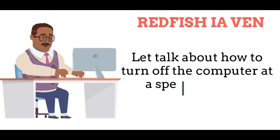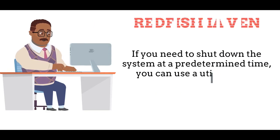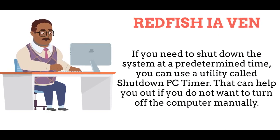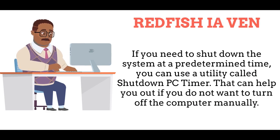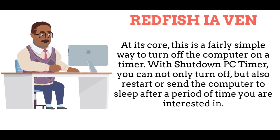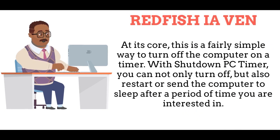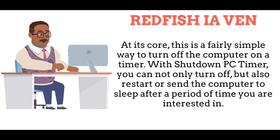Let's talk about how to turn off the computer at a specified time. If you need to shut down the system at a predetermined time, you can use a utility called Shutdown PC Timer. This is a fairly simple way to turn off the computer on a timer. With Shutdown PC Timer, you can not only turn off but also restart or send the computer to sleep after a period of time you are interested in.